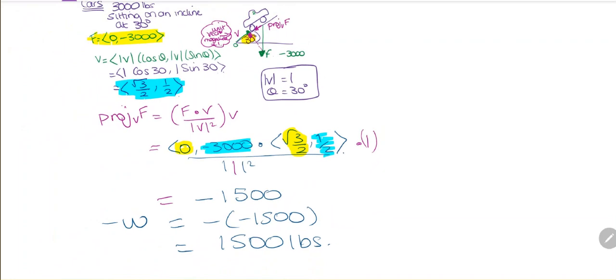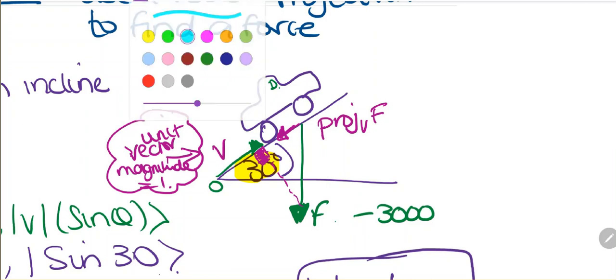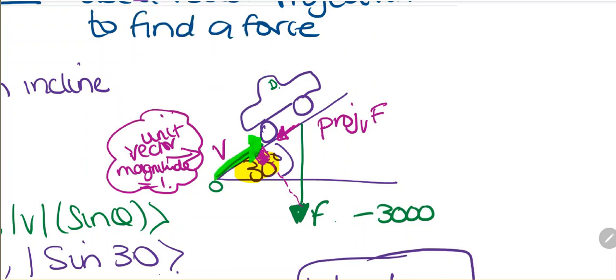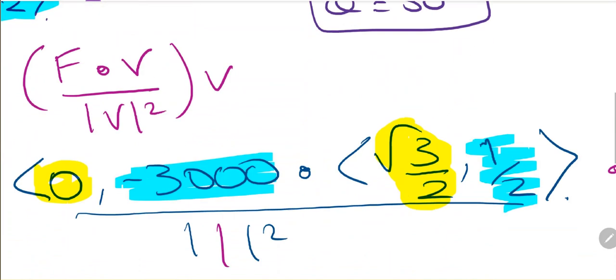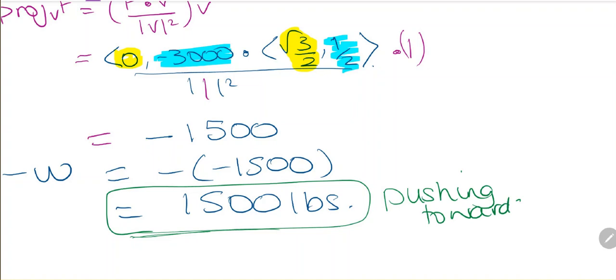To stop this car from rolling down the hill, we need to use 1500 pounds of force. This is pushing towards the hill to stop the car rolling down.